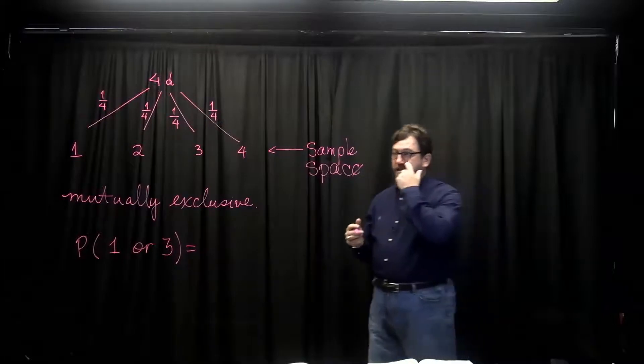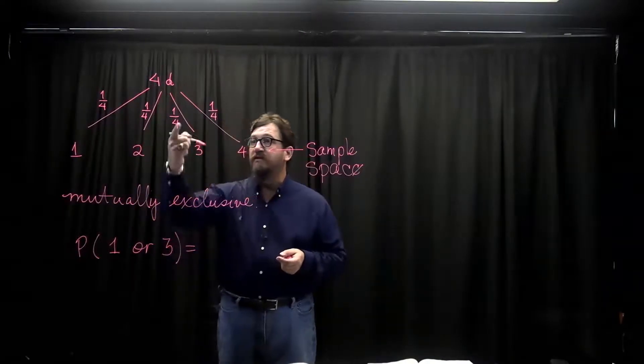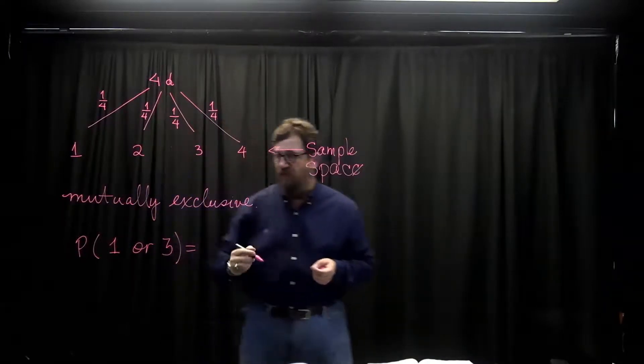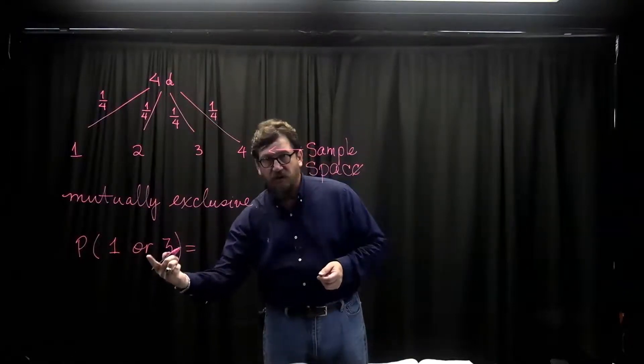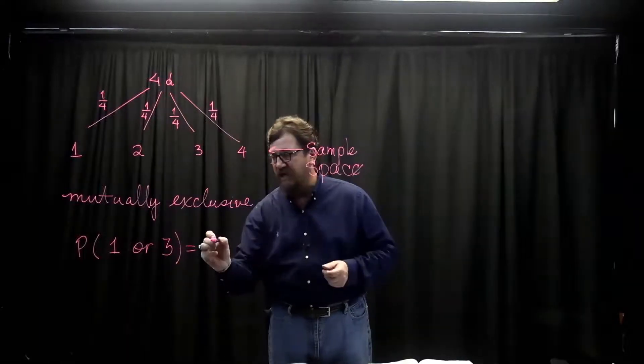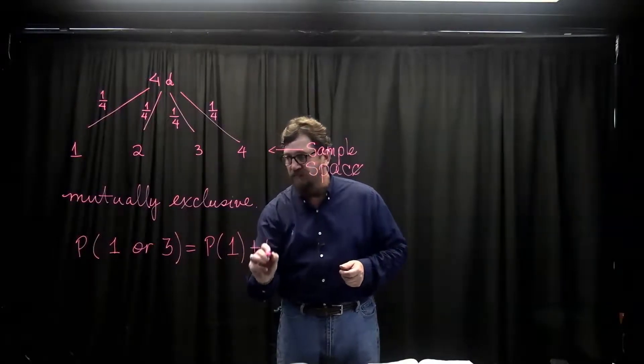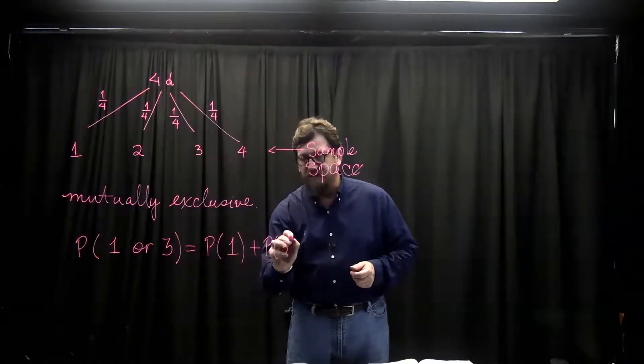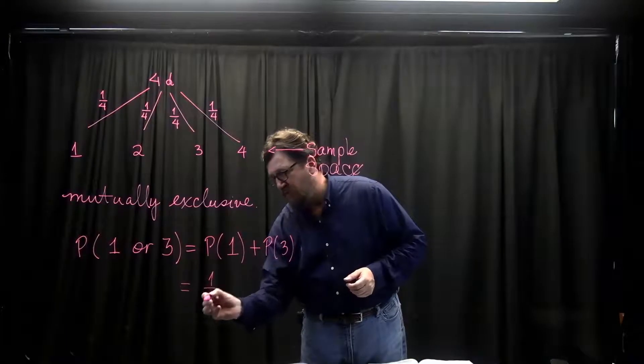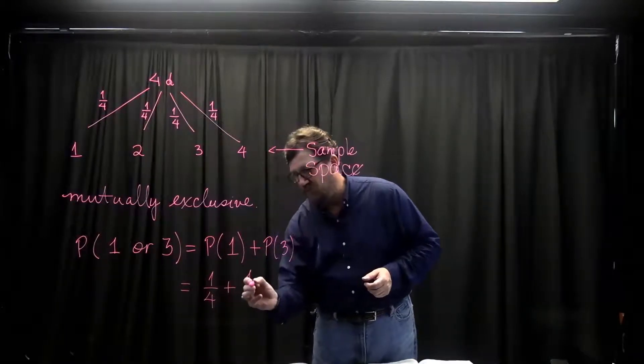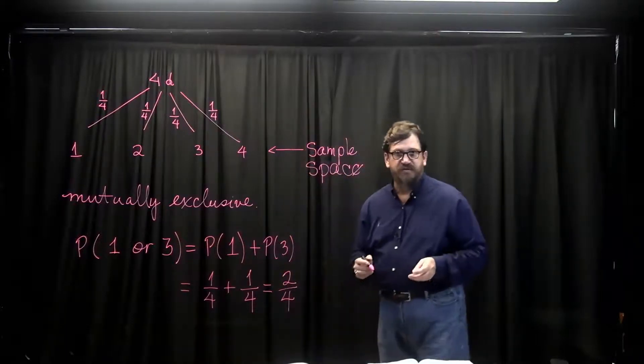When I look at my sample space, I see the probability of tossing a 1 is one-fourth. The probability of tossing a 3 is also one-fourth. And since these are mutually exclusive, I can see the word OR and I change that to say this is the same as the probability of tossing a 1 plus the probability of tossing a 3. And each of these is one-fourth. So I see one-fourth plus one-fourth for a total outcome of two-fourths.